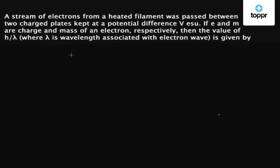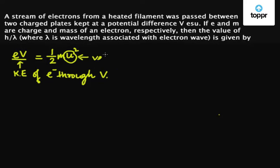Now let us write the kinetic energy equation of an electron passing through the potential difference V. We have eV, the kinetic energy of the electron through V volts, which equals (1/2)mu², where u is the velocity of the electron. This implies u equals √(2eV/m).